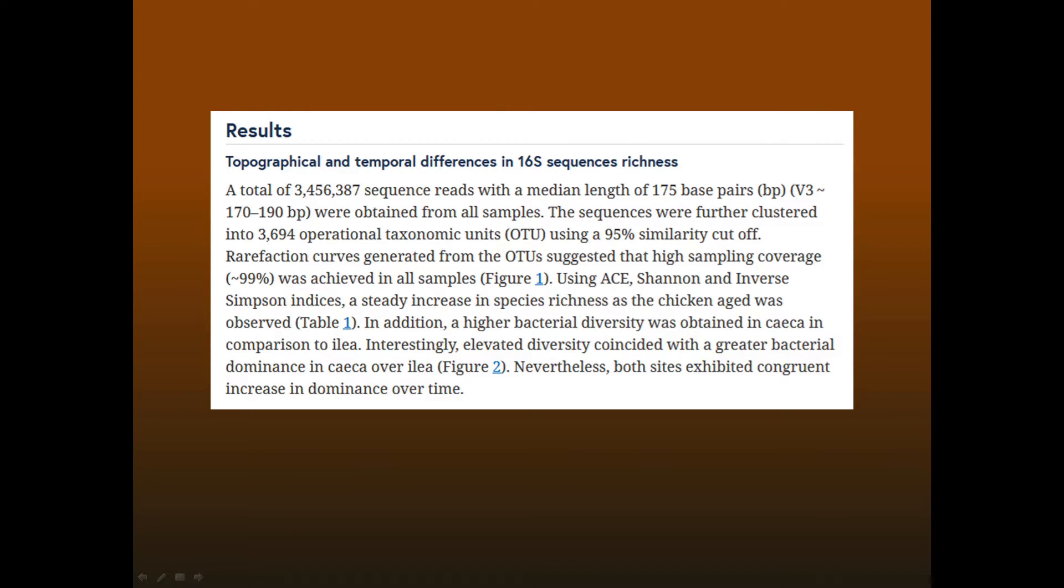Unfortunately, the problems with measuring diversity by 16S sequencing are not well known in the field, and many, if not most published papers report questionable results. Here's a typical results section. They report richness. They generate rarefaction curves. They extrapolate richness using the ACE estimator. They calculate the dominance index, which is based on the frequency of the most abundant OTU. None of these can be measured using 16S data, but the paper fails to consider these problems.